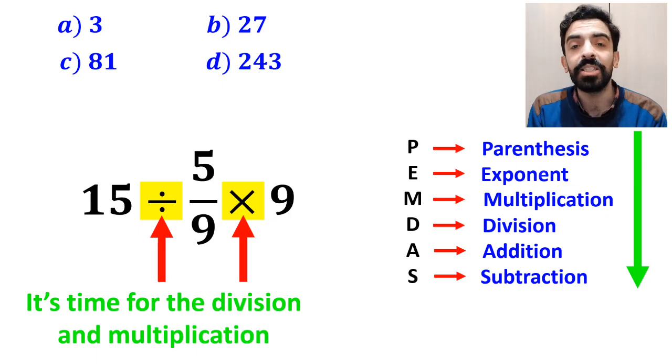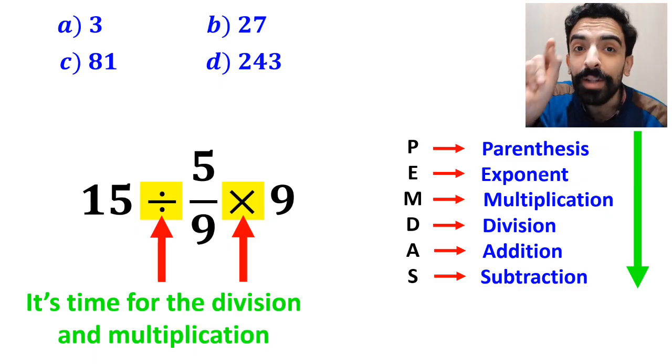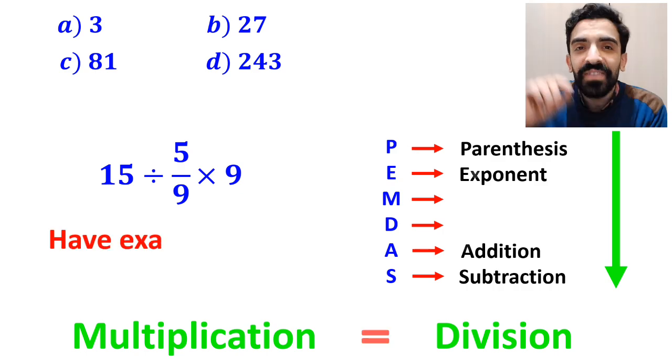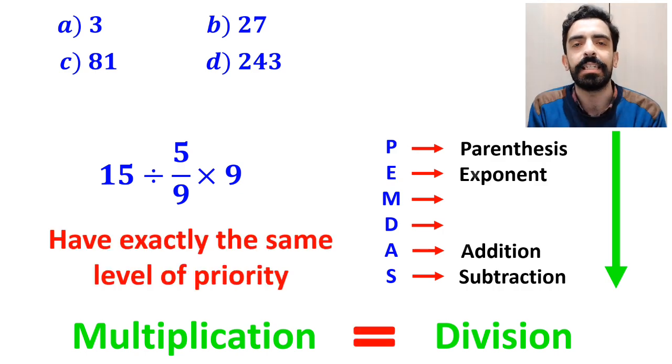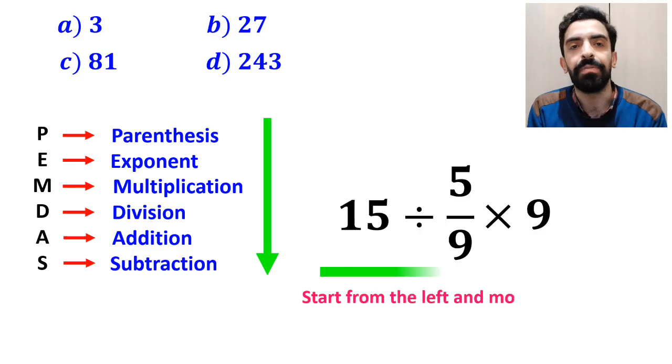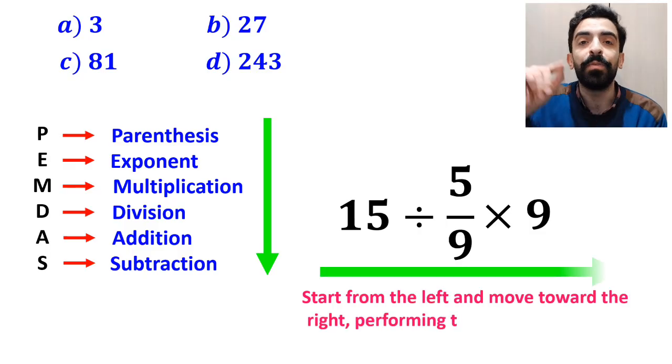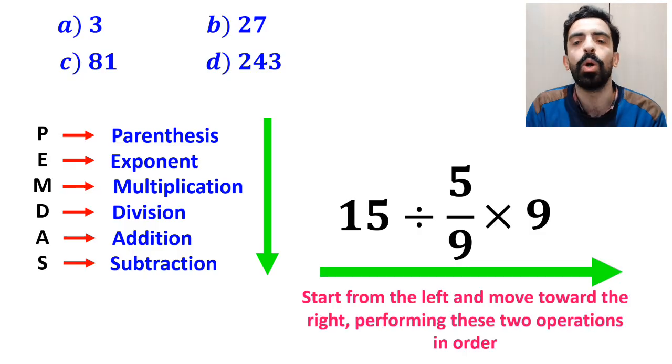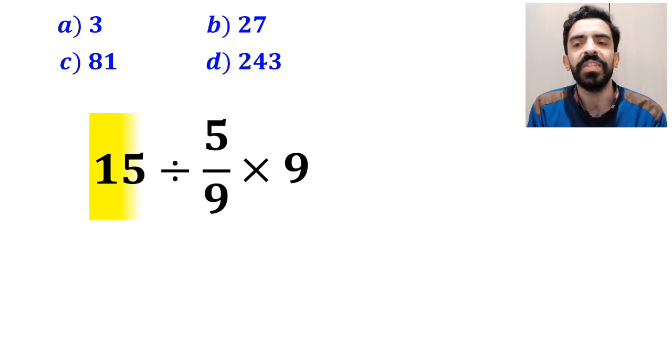However, it's very important to note that according to the PEMDAS rule, multiplication and division have exactly the same level of priority. In this situation, the best strategy is to start from the left and move toward the right, performing these two operations in order. So we start with the expression 15 divided by 5 over 9.